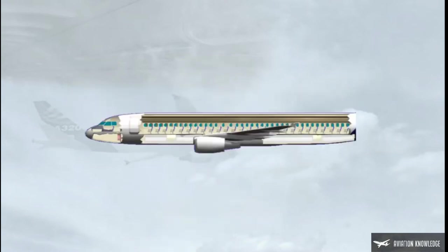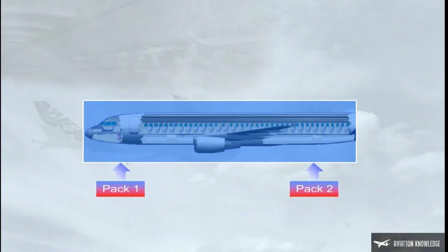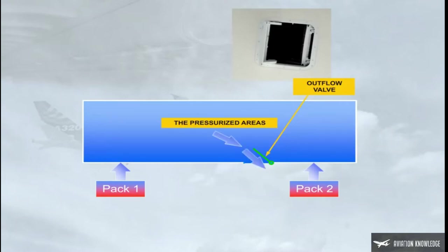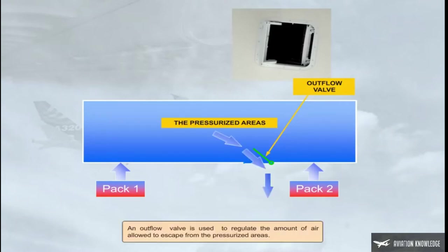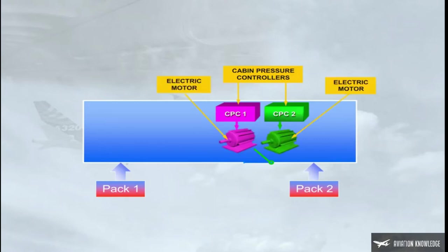The concept of the system is simple. Air is supplied from the air conditioning packs to the pressurized areas. An outflow valve is used to regulate the amount of air allowed to escape from the pressurized areas. Automatic control of the outflow valve is provided by two cabin pressure controllers. Each controller has an electric motor to move the outflow valve.